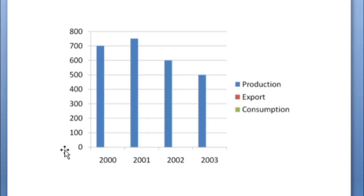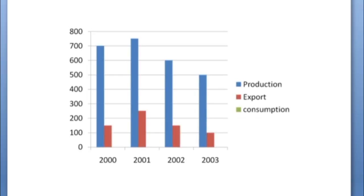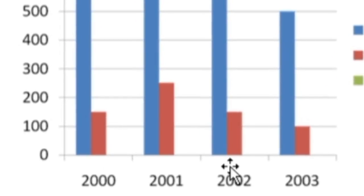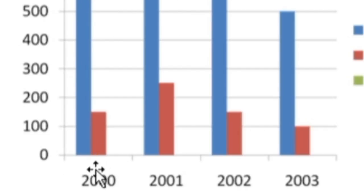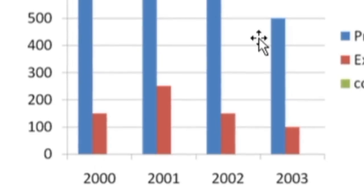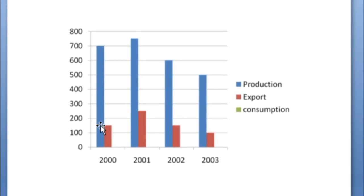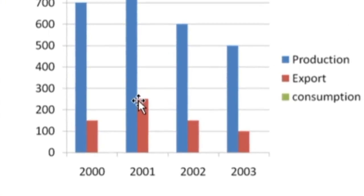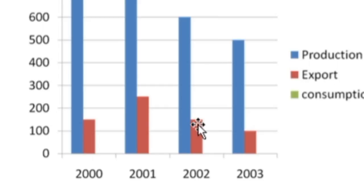Next we go to exports. In 2000 exports were 150 — between 100 and 200. If you are drawing by hand with pen and pencil, you can use different designs or different colored pens to distinguish the bars. In 2001 exports were 250, between 200 and 300. In 2002 it was again 150, and in 2003 it was 100.